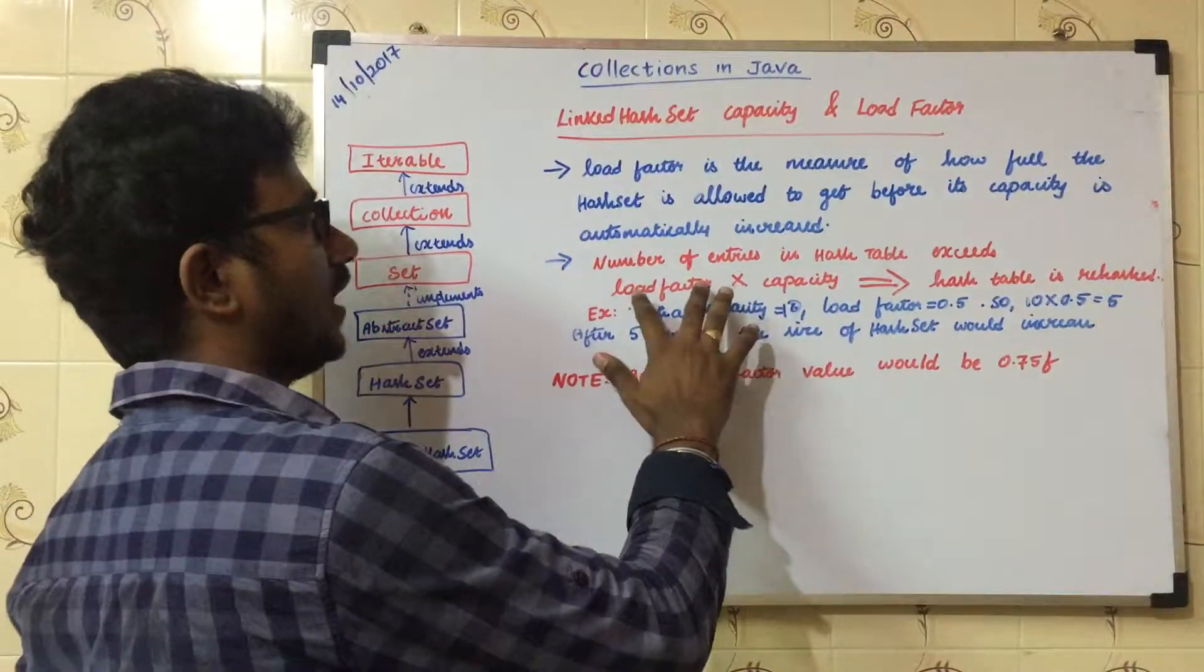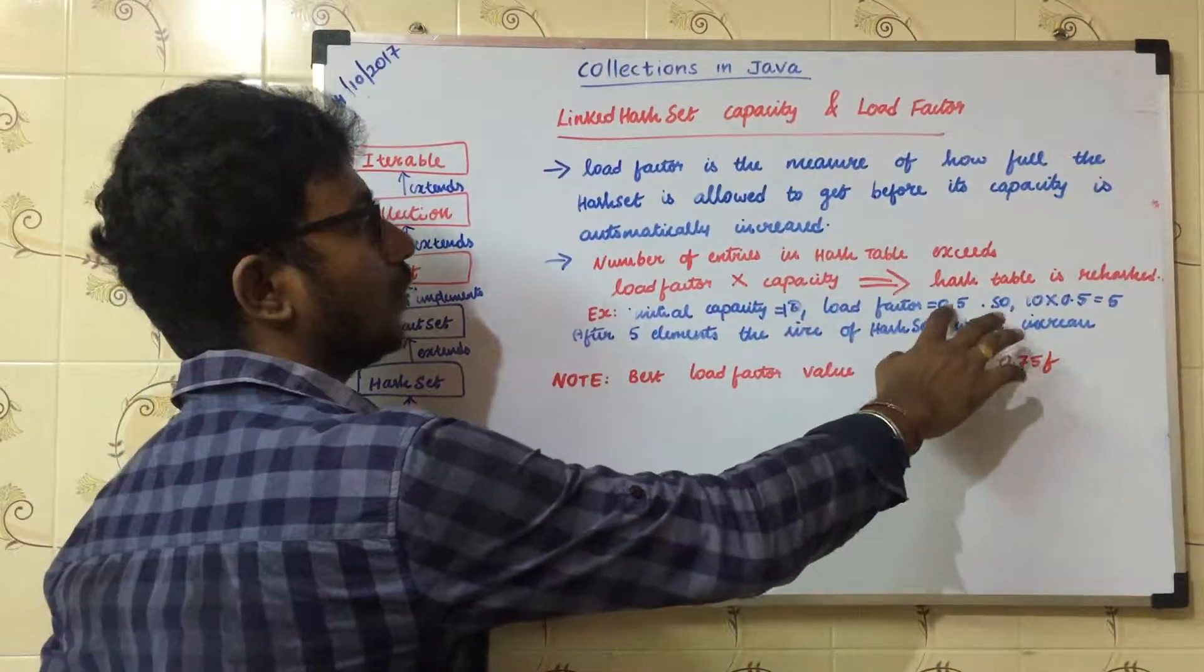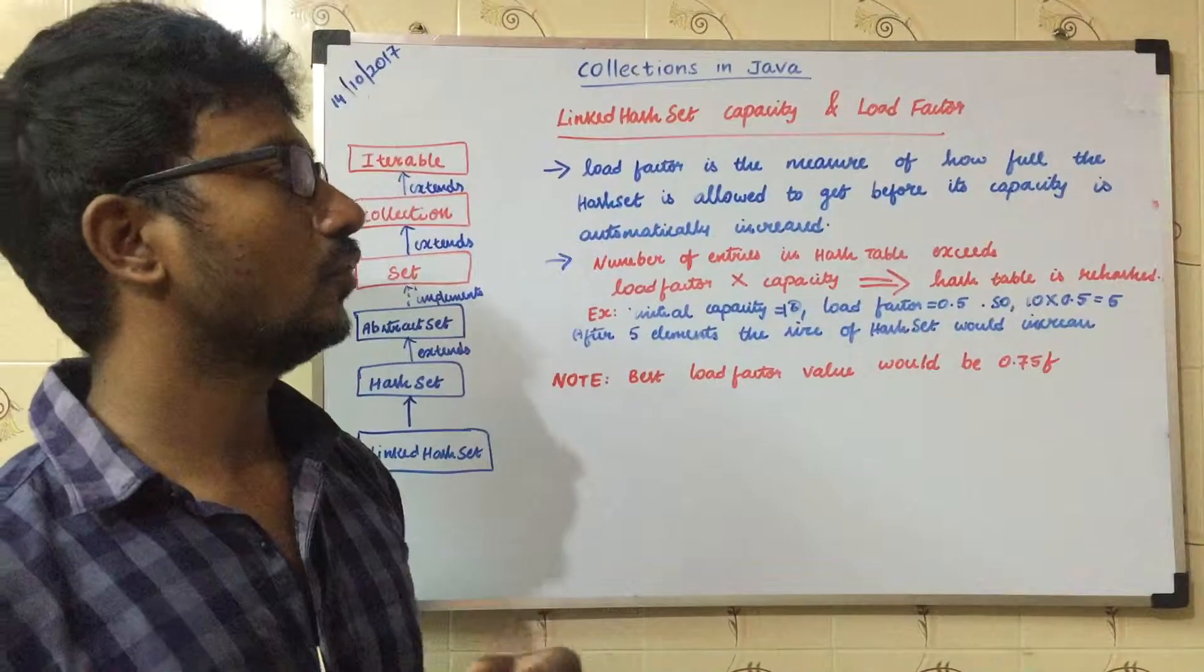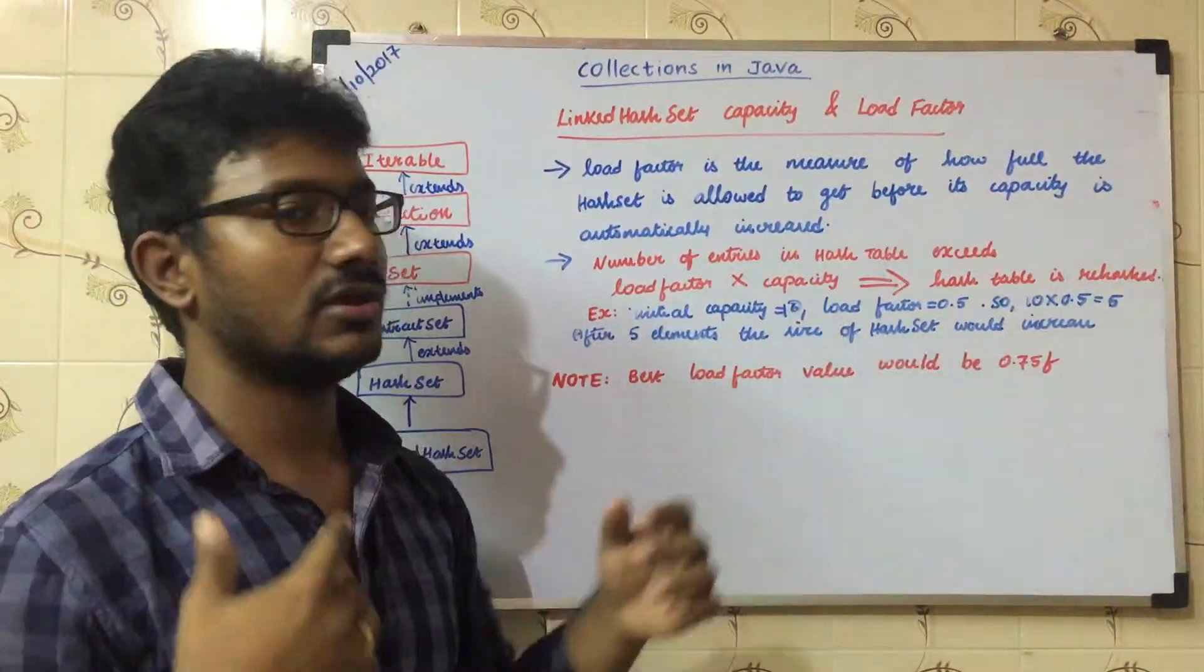For example, the load factor value is 0.5 and the capacity is 10. If 10 into 0.5 is 5, if 6 elements is getting added, then the rehashing happens.